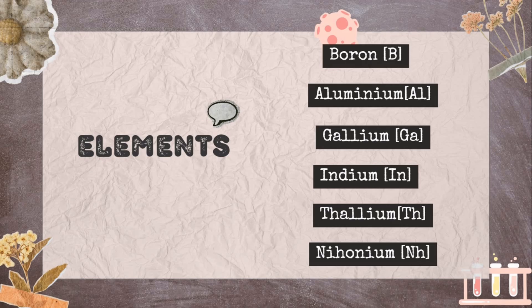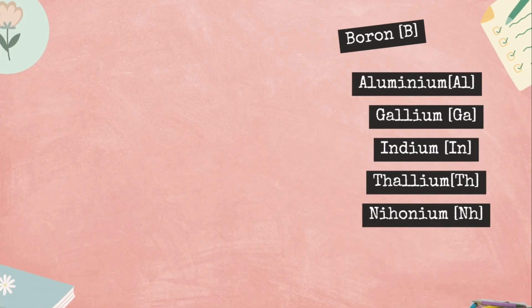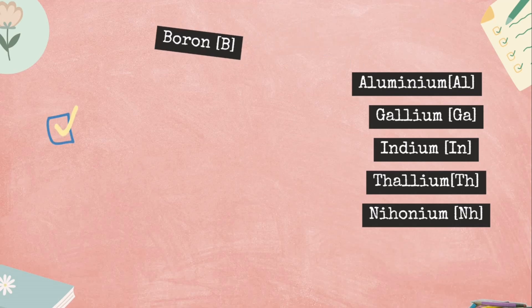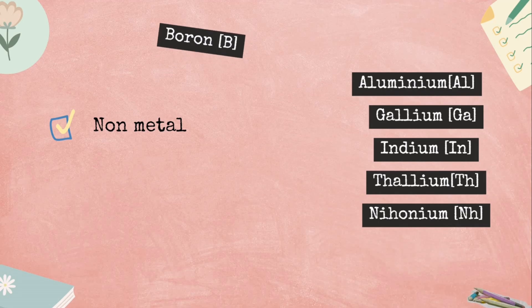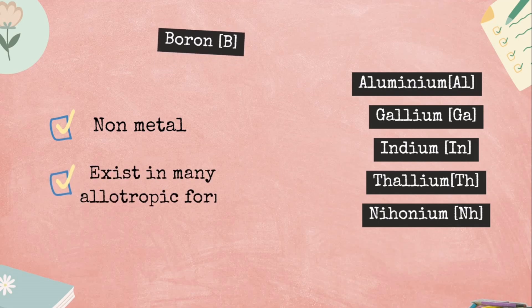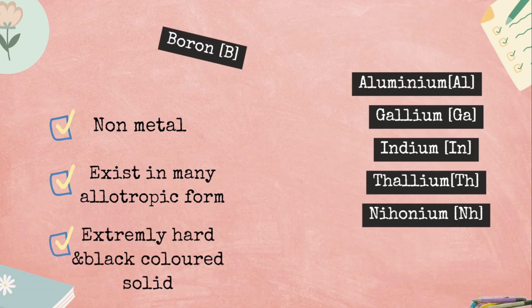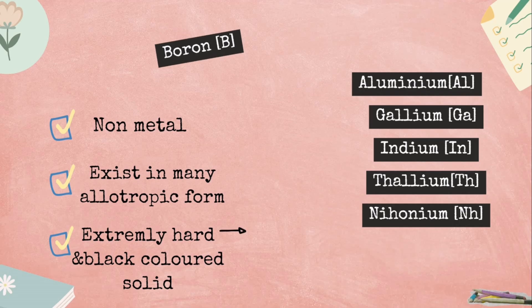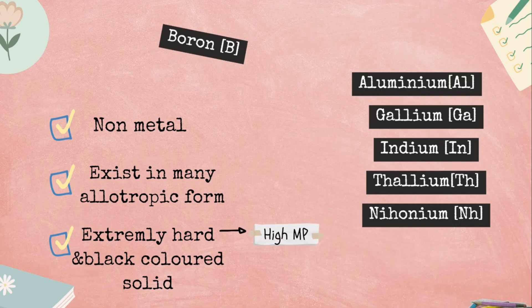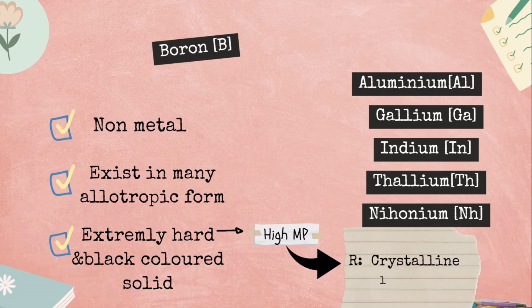There's something special about boron. It is the only non-metal of the group, as the metallic nature goes on increasing down the group. It exists in many allotropic forms. It also has an extremely hard and black colored solid nature. Due to its extremely hard nature, it has a high melting point, and the reason for that is its crystalline lattice.